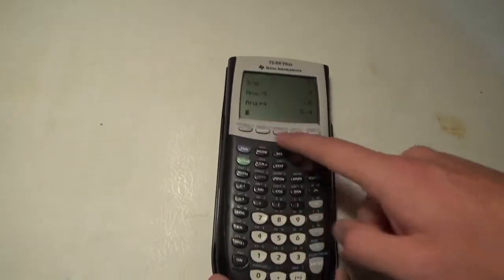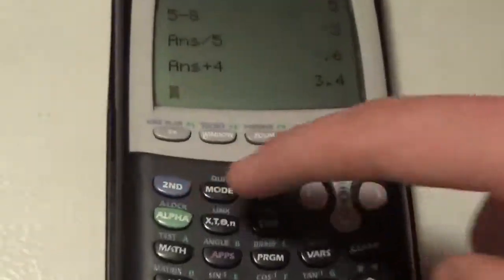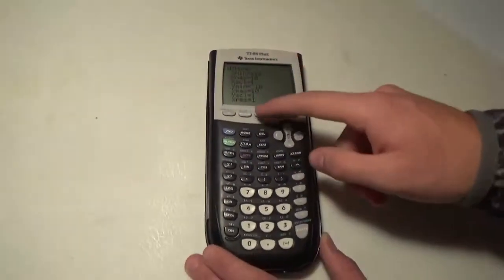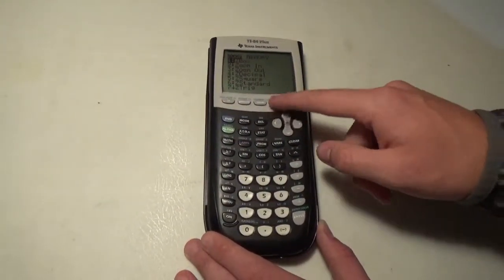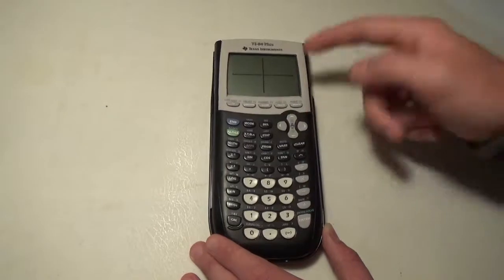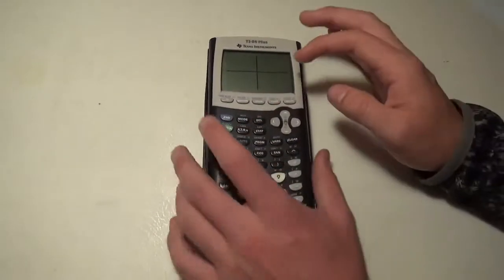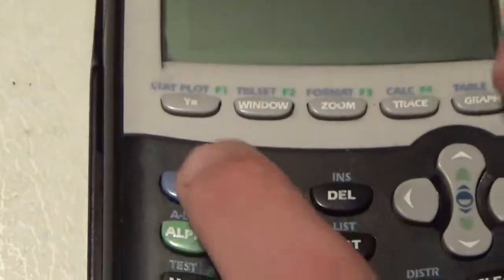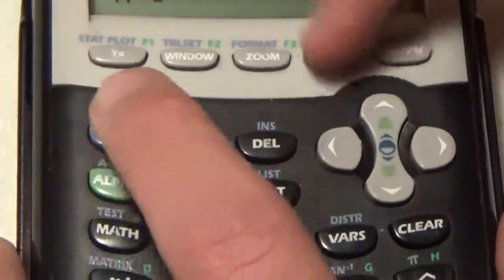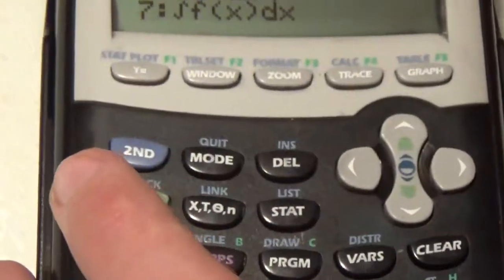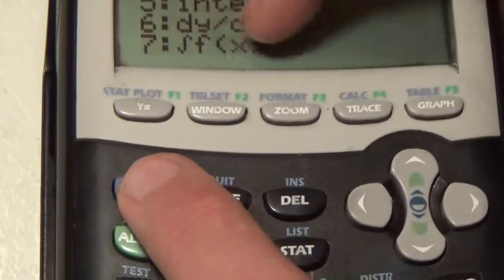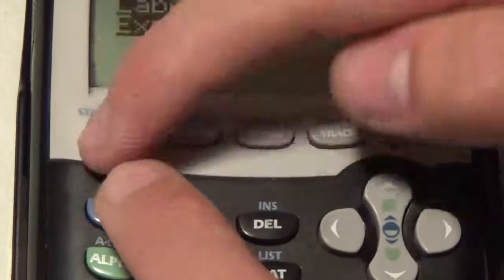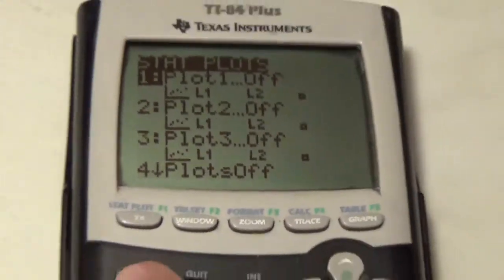Up top here we have all our graphing buttons. Here you can put in all your functions, adjust the window, the zoom features, trace along the function and the graph itself. All these have second functions as well, like the table. You can view your table right here, all the calculate buttons for finding value, zero, minimum, maximum, derivatives, integrals, your format menu, and then the stat plots for statistics.